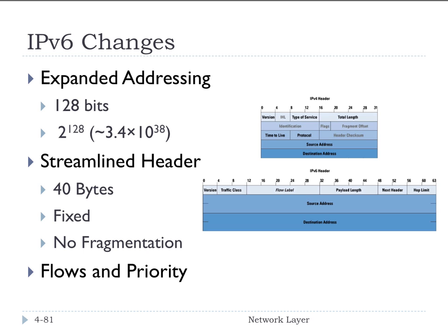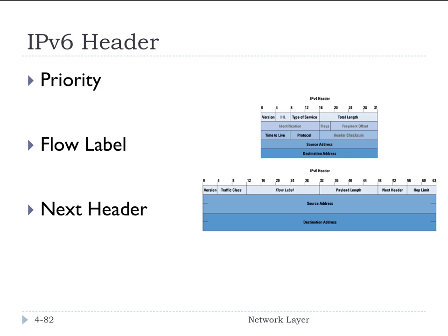Another big change to IPv6 is it added the idea of flows and priority, where you can have flows of data — sort of like streaming media. You may need to give those certain priority to get good quality of service and good video streaming quality. The priority field is used to identify priority among datagrams in a flow, so you can mark some datagrams as higher priority and they would experience better service.